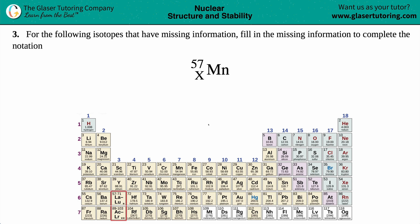Number three: For the following isotopes that have missing information, fill in the missing information to complete the notation. We have a 57 on the top, we have an x value on the bottom, and we have Mn.